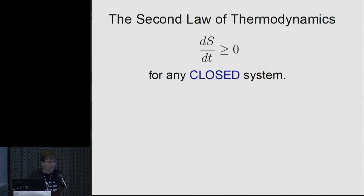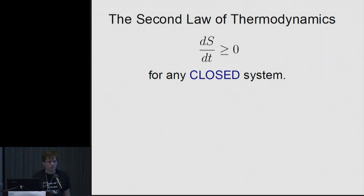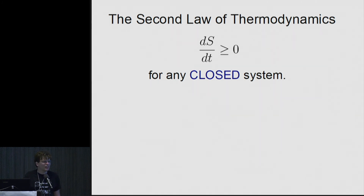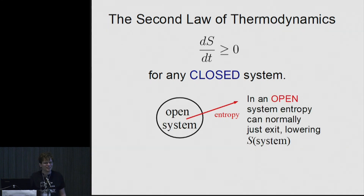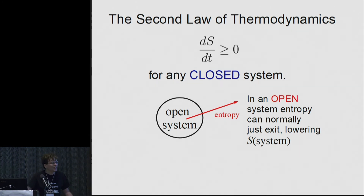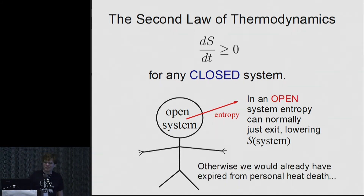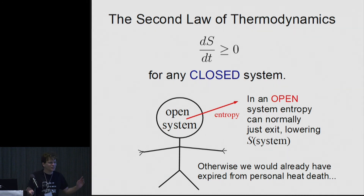The second law of thermodynamics says that the entropy S is increasing with time for any closed system. That closed bit is a pretty important caveat, because in an open system there's something else entropy can do, which is it can just leave. And if it just leaves, it lowers the entropy of the system. This is important to each of us because we are open systems, and if our entropy couldn't go down, we'd quickly be dead.